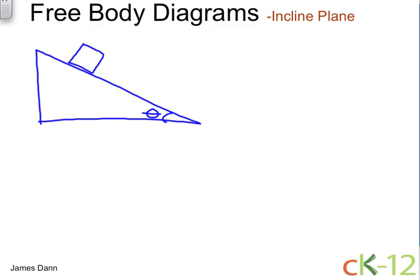Now we have friction, and we have a normal force, and we have gravity. Let's draw the forces as they act on the box. The normal force acts at the interface of the two surfaces. And let's give that an N for normal force.